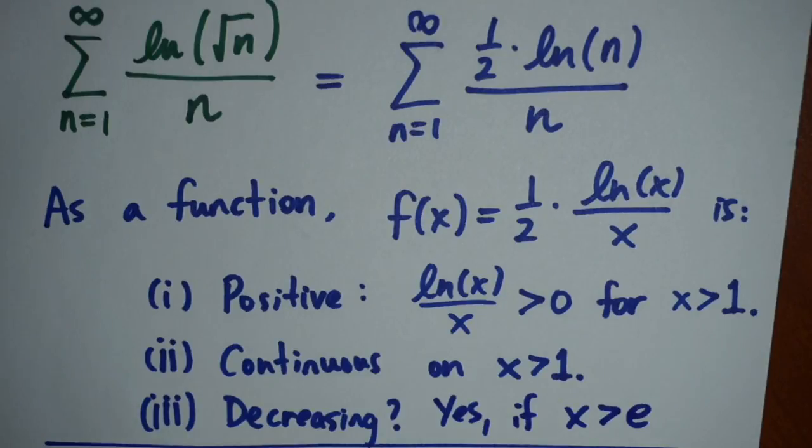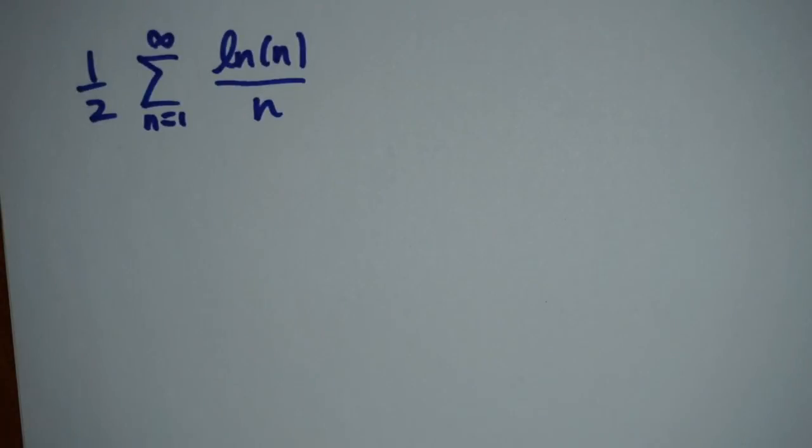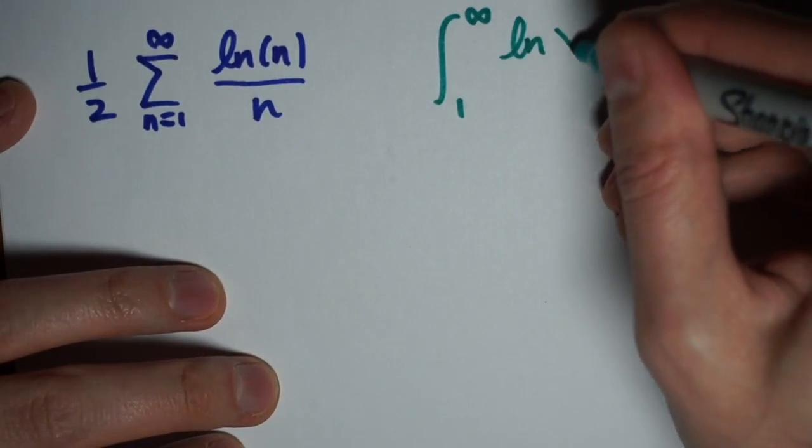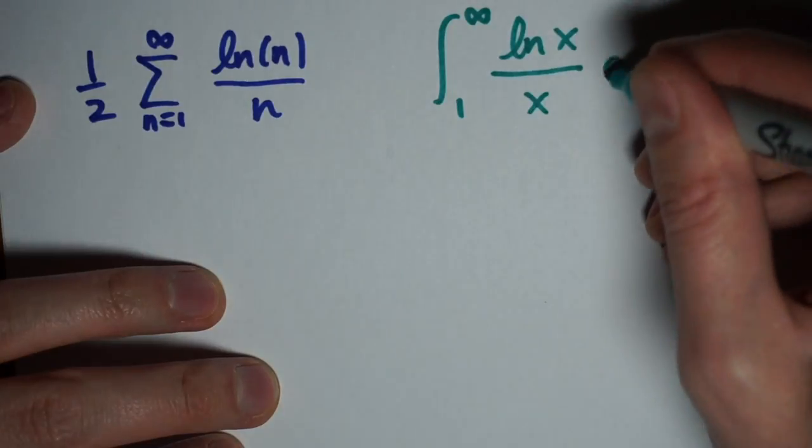Which means with all these three things working, we can use the integral test. So I'm going to compare the series that I have. I did pull the one half out of the series, so I don't have to worry about the constant. But I'm going to compare the series that I have to the integral of log x divided by x.